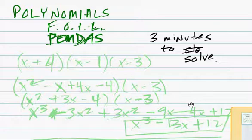And we're going to go with this problem, x plus 4, x minus 1, and x minus 3. And we're just going to work through each one, starting with PEMDAS, right, parentheses, FOIL.